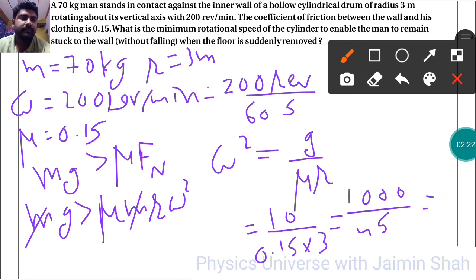And we need to find omega squared, so then under root of this, omega is equal to under root 1000 upon 45 radians per second.